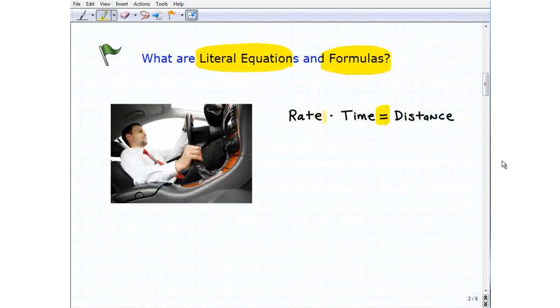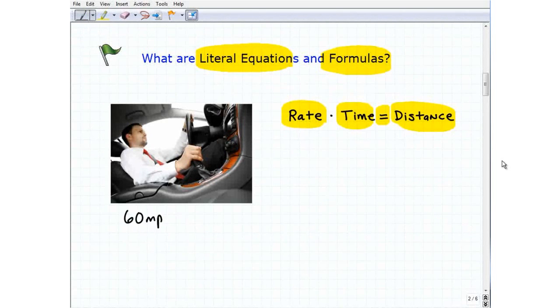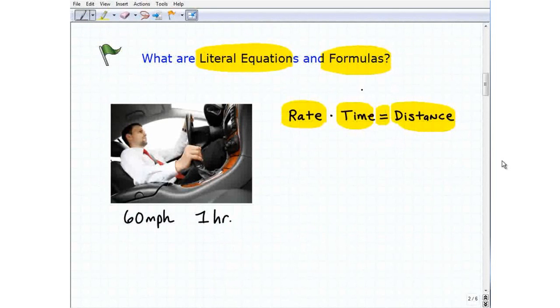So I have an example of one here that rate times time equals distance. So for example, let's say this car here, let's say this guy is going 60 miles per hour and he travels for one hour. So using this formula or this equation where the variables represent a quantity in some sort of physical relationship, I can actually figure this out. So his rate was 60 miles per hour, his time was one hour, and his distance is going to be the product of those two. So 60 times one, it's going to be 60 miles.